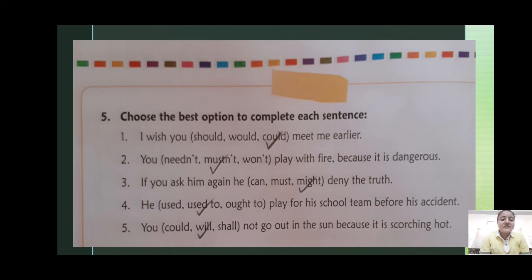Needn't means need not. Mustn't means must not. Won't means will not. 'Play with fire because it is dangerous' — answer: mustn't, must not. 'If you ask him again, he can / must / might deny the truth' — answer: might. 'He used to / ought to play for his school team before his accident' — answer: used to. 'You could / will / shall not go out in the sun because it is scorching hot' — answer: will.